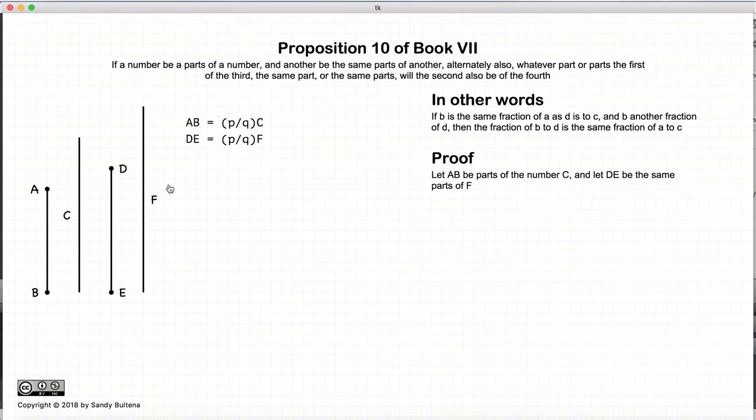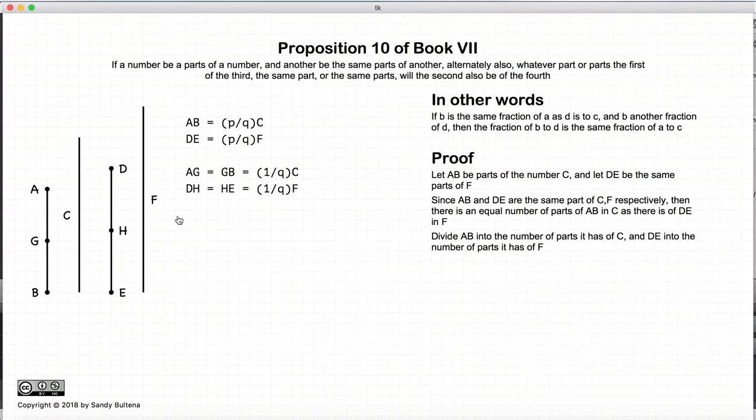So to prove it, we're going to start off with AB, which is some parts of C, and DE, which is some parts of F.